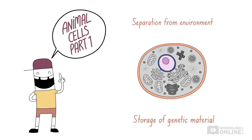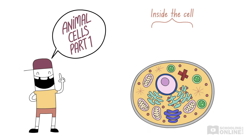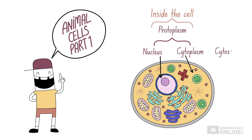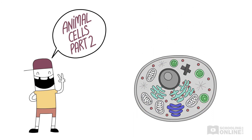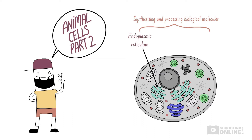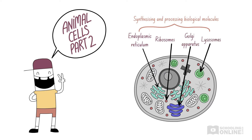Let's quickly revise what we have covered in the last two videos. In the first lesson, we introduced the protective cell membrane and the nucleus. We also compared the protoplasm and the cytoplasm, which both contain cytosol. The second lesson explored organelles involved in synthesising and processing biological molecules, including the endoplasmic reticulum, ribosomes, the Golgi apparatus and lysosomes. If you need to refresh your memory, please see our earlier videos on animal cells.